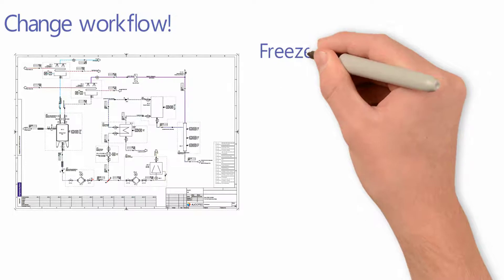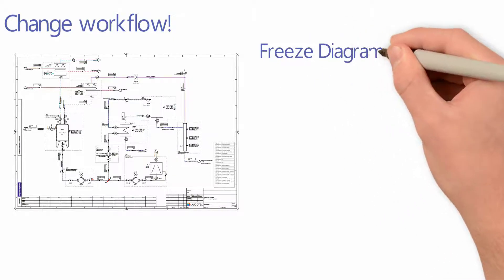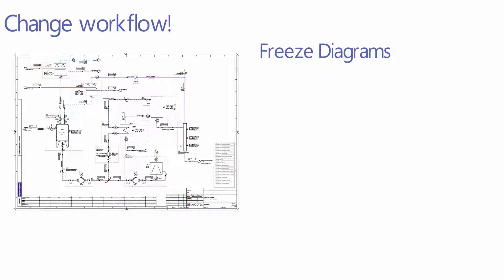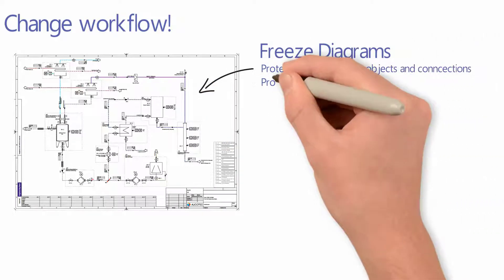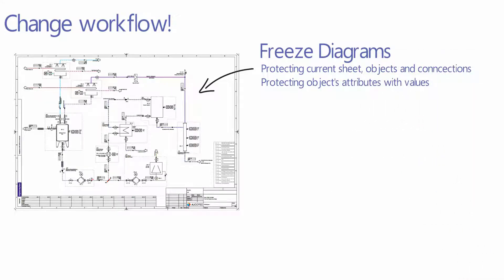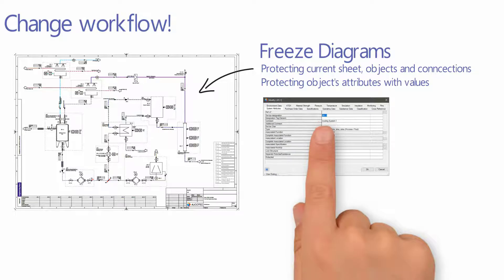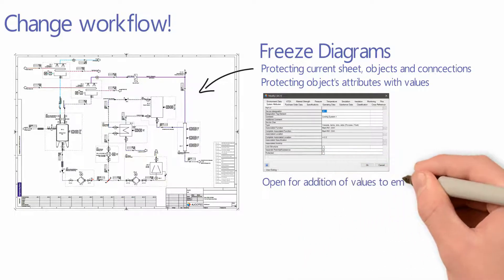To protect a diagram from changes to its current status, it can be frozen. Freezing a diagram protects its existing objects, the objects' attributes with values, and connections. This diagram is still open for adding new objects and connections and to add values to the attributes which are not frozen.